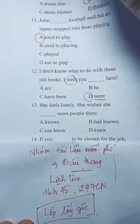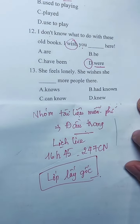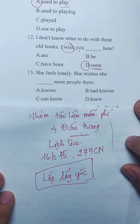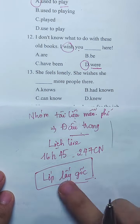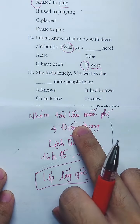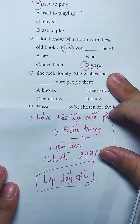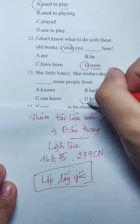Câu 13 cũng là câu ước ở hiện tại, tương tự câu 12. Dùng thì quá khứ đơn - V2. Cô ta cảm thấy cô đơn và cô ta ước rằng cô ta biết nhiều người ở đó hơn. Ước ở hiện tại dùng quá khứ V2.